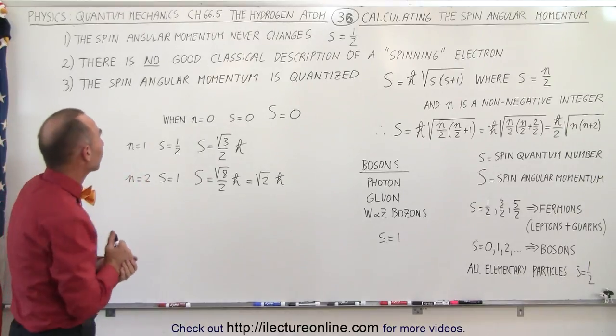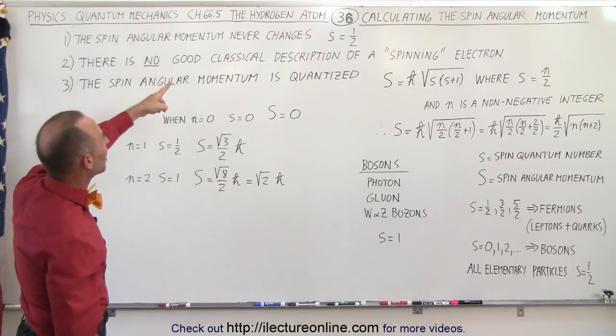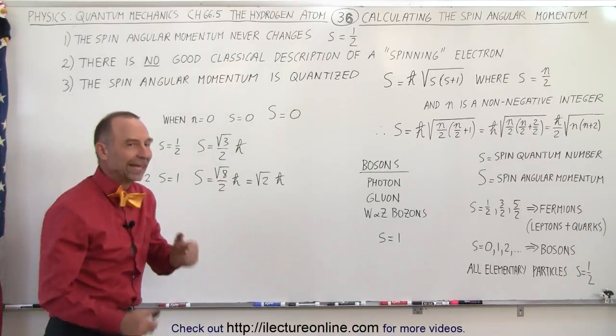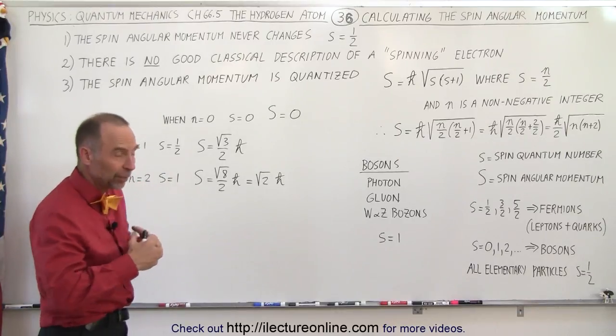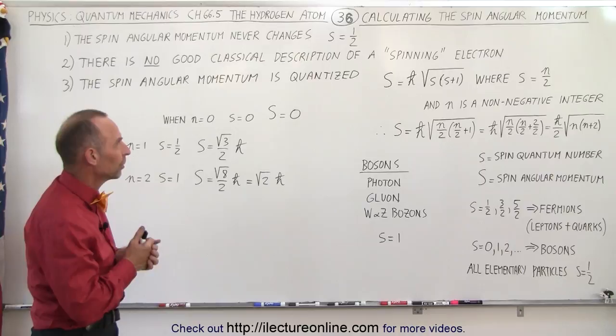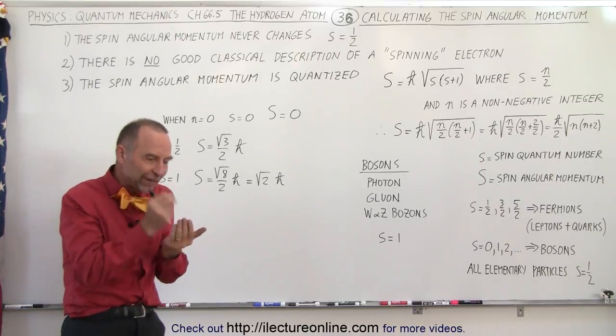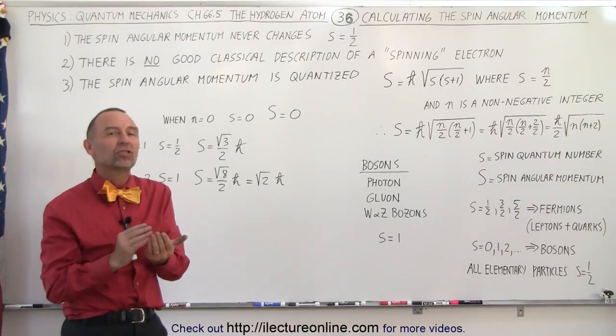So let's take a look. First of all, the spin angular momentum never changes. S equals one-half, and now we're talking about the electron of course here because we're also going to talk a little bit about some other particles. So it's a fixed quantity and it never changes.